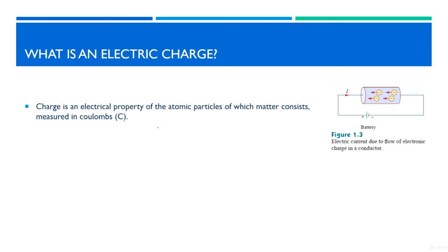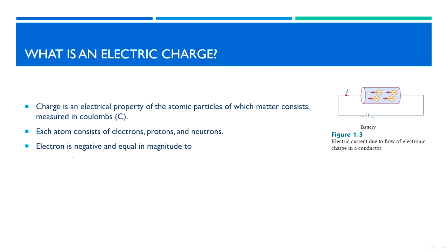The neutrons carry a neutral charge and the electrons are represented by negative charges. The electrons, protons, and neutrons together are called charges — something which has a positive or negative value — and these charges form our atoms. Each atom consists of electrons, protons, and neutrons.